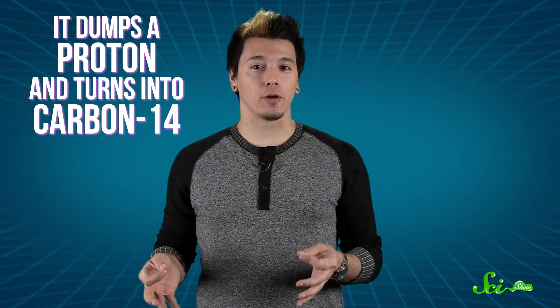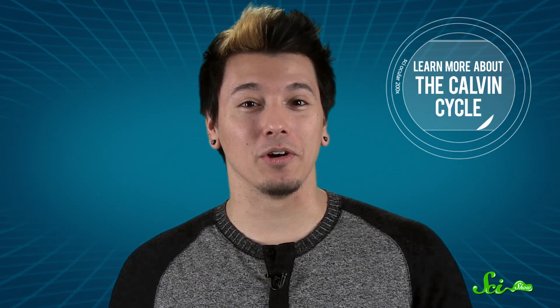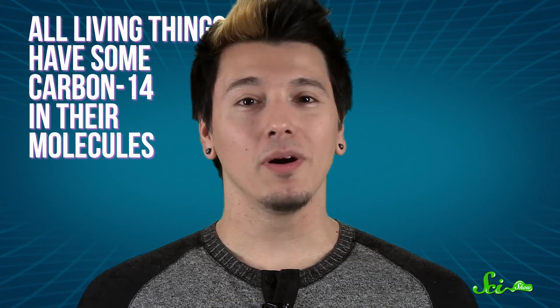All life on Earth needs carbon, but it isn't picky about what kind of carbon, so organisms happily take up carbon-14 to make the compounds they need. When plants turn carbon dioxide into glucose, for example, some of that CO2 contains carbon-14. And eventually, that carbon makes it all the way up the food chain, which is why all living things have some carbon-14 in their molecules.